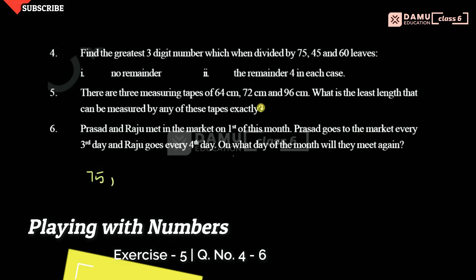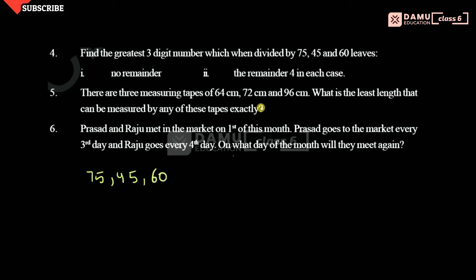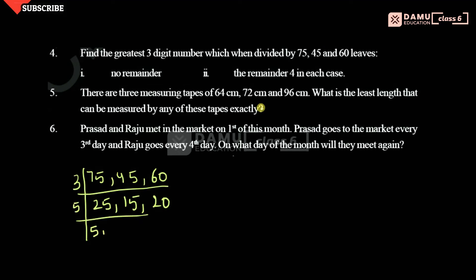So we have 75, 45 and 60. We are going to calculate using the long division method. Dividing by 3, then by 5, then by 2 — continuing the prime factorization to find the LCM.